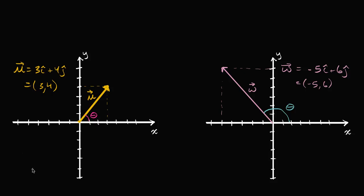In this video we're going to look at a series of vectors and draw them in standard form, where their initial points, or their tails, sit at the origin. We'll figure out the positive angles they form with the positive x-axis. Pause the video and see if you can figure out what these thetas are going to be on your own. We're going to figure them out in degrees.